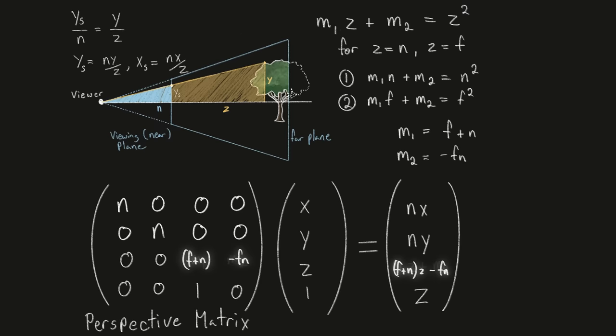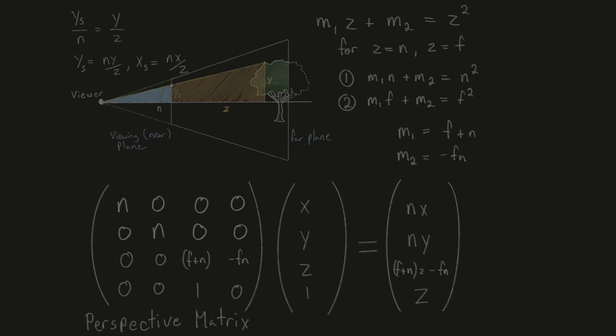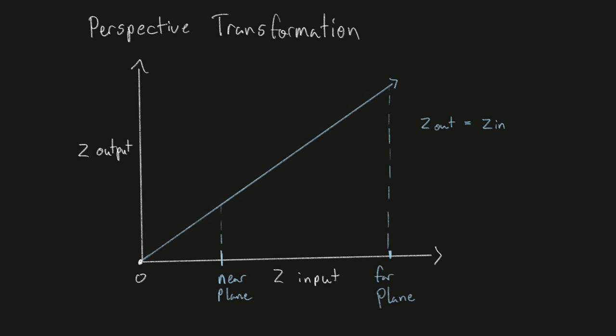So let's take a minute to go over what this really means. We wanted to have a one-to-one linear relationship between the input z value and the output z value, but the best we could do is make this true for points at the near depth and far depth planes. The z depth values on the near and far planes remain unchanged, but the relationship is no longer linear. However, this is still useful because the relative ordering of the z values between the near and far planes is preserved. This means we can still use z to determine the ordering of objects within our scene.